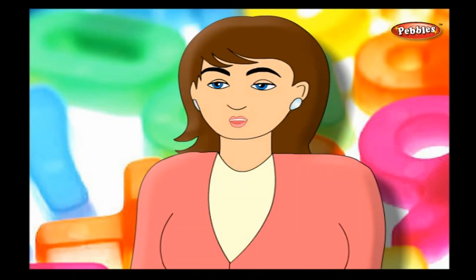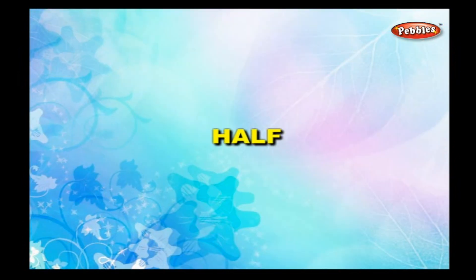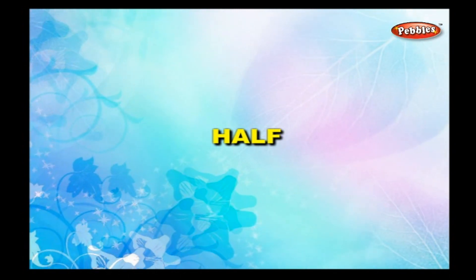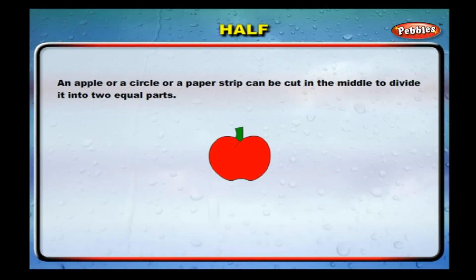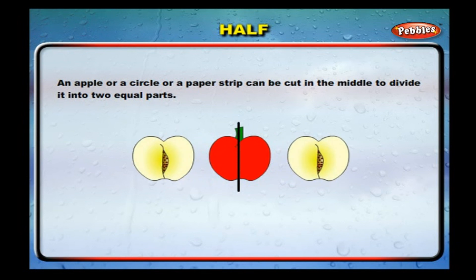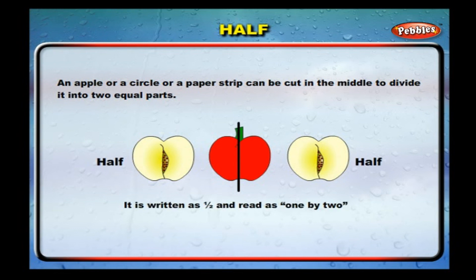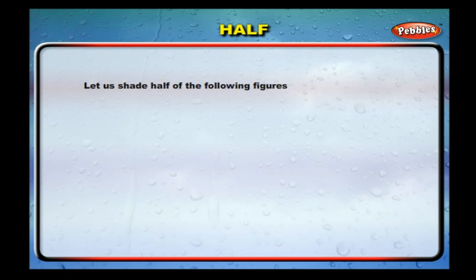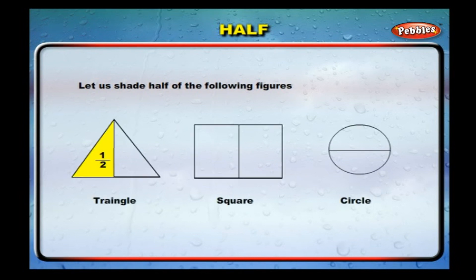Fractions as studied in class 2. A fraction is a part of a whole. An apple, a circle, or a paper strip can be cut in the middle to divide it into two equal parts. When something is divided into two equal parts, each part is called a half. It is written as 1/2 and read as one by two.